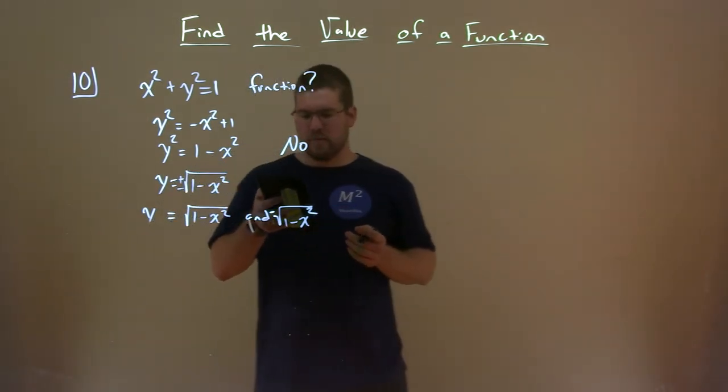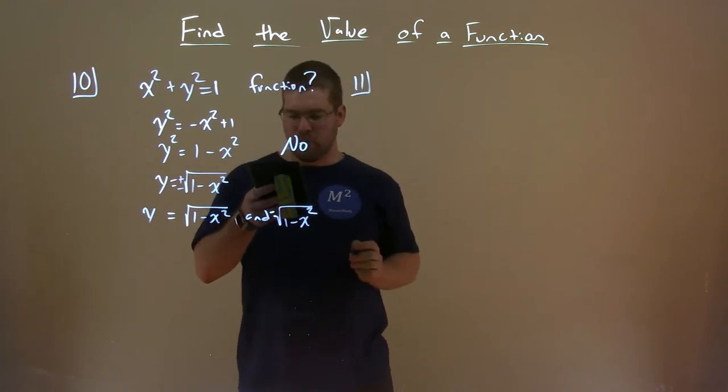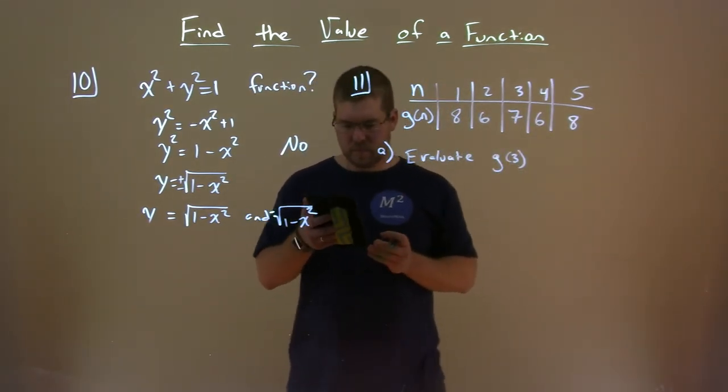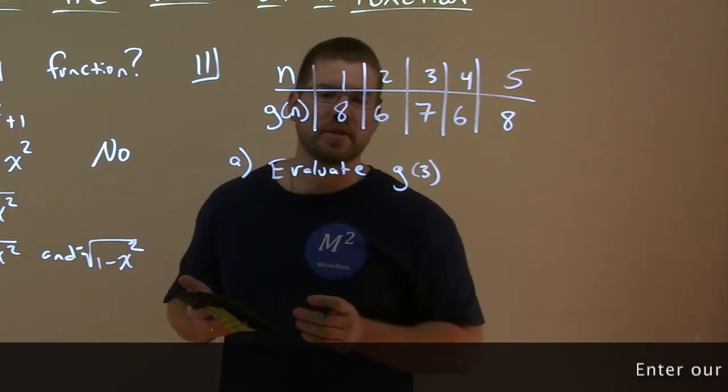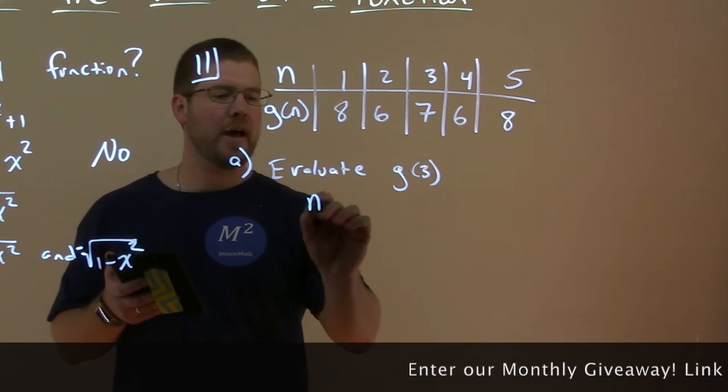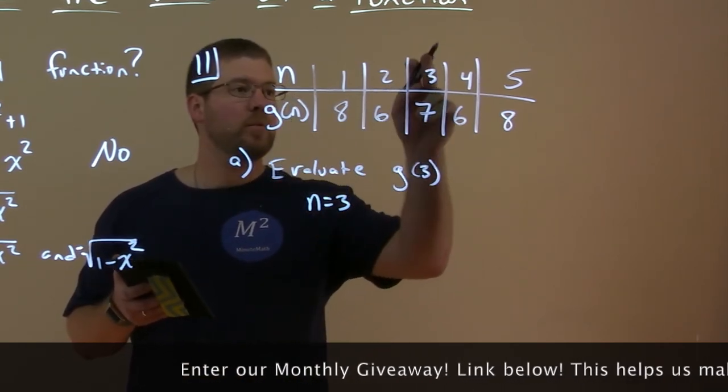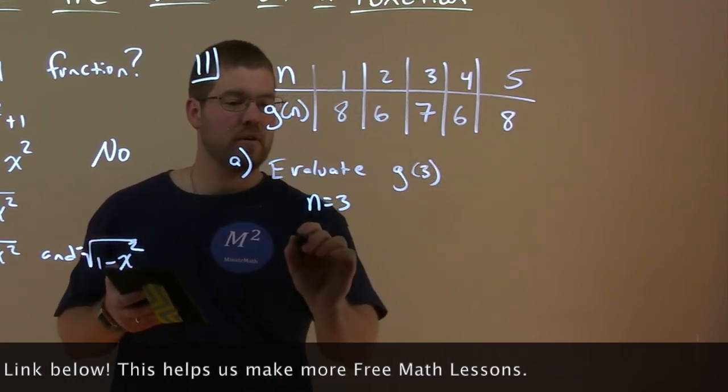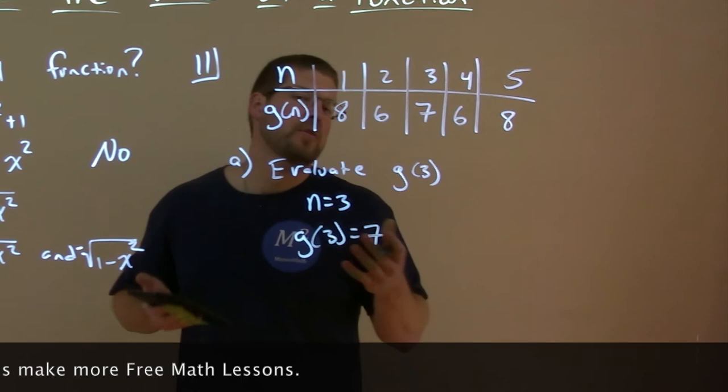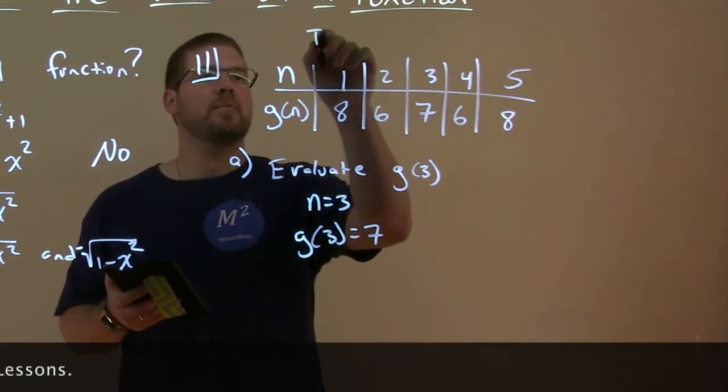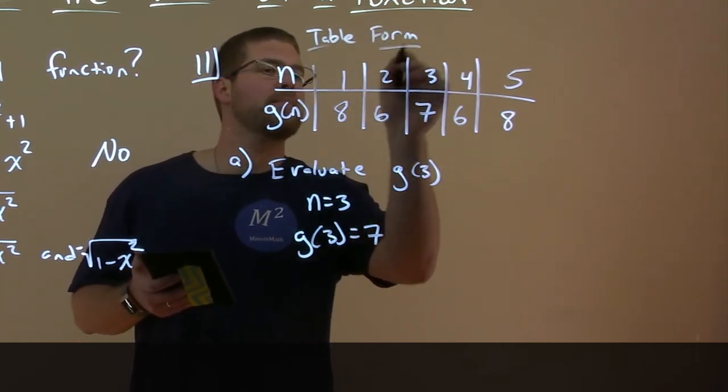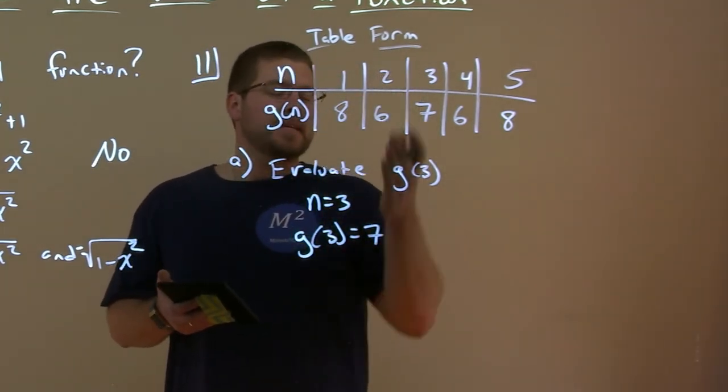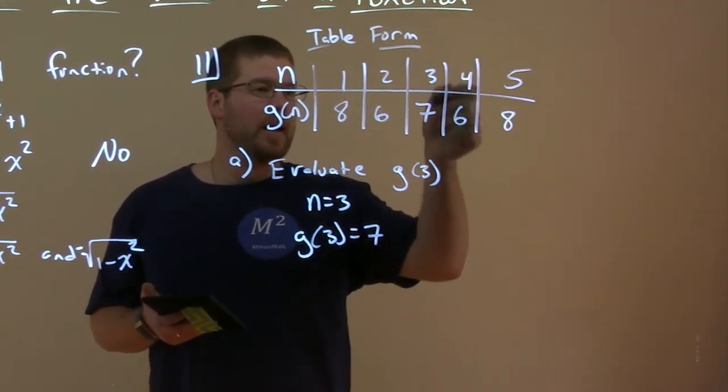Now let's evaluate in table form. Number 11, our first question says evaluate g(3). Notice here n equals 3 for g(3). When n equals 3 for whatever this function is in our table, what is g(n)? g(n) or g(3) is 7. So g(3) equals 7. We don't know specifically what this function is, but they gave us a function in table or tabular form. Sometimes we don't see it as an equation, but we can use tables to find our values. Our input is 3, output was 7.